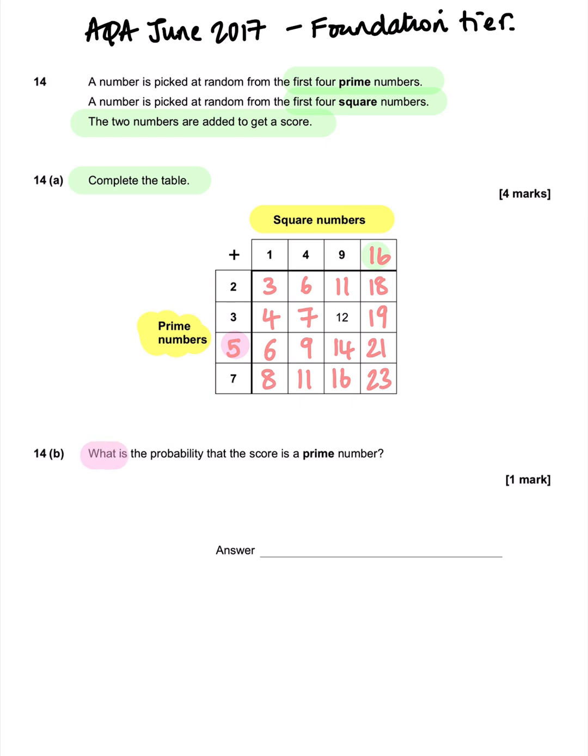Part B: what is the probability that the score is a prime number? We're looking at those answers we've just written for any that are prime numbers. So we have 3, 11, 7, 19, 11, and 23.